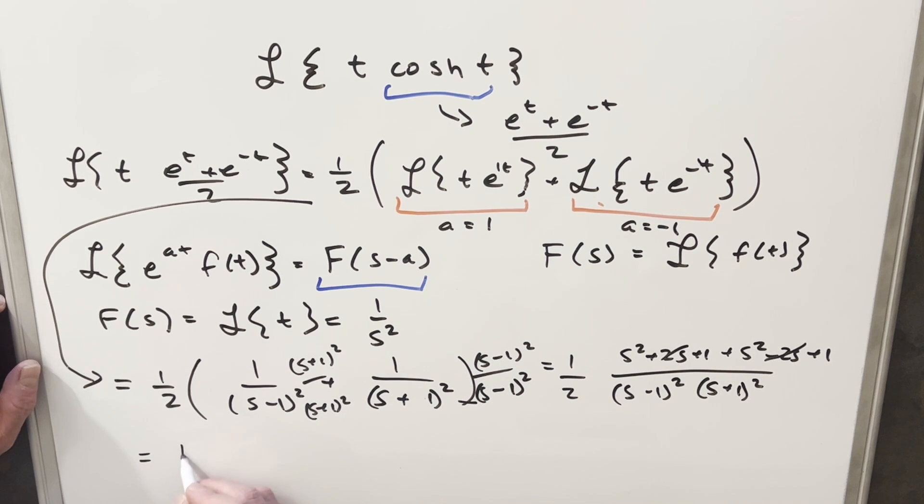We're going to have our one half out front. s squared plus s squared gives me two s squared. One plus one gives two. Now in the denominator, because both these are squared, I can multiply s minus one times s plus one to get s squared minus one squared. Then I can take the two and cancel with this two and this two here, leaving a one right here.